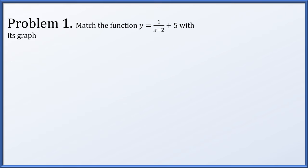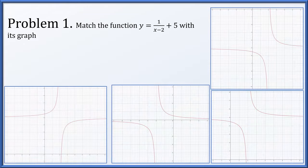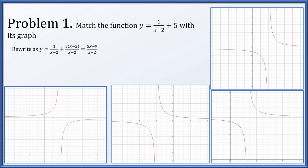In problem one, we're asked to match the given function y = 1/(x-2) + 5 with its graph. We have these options here, so we need to determine which one matches. The first thing I'd like to do is rewrite it as a single fraction. So we give the term 5 the common denominator of x minus 2. This will simplify as (5x - 9)/(x - 2).